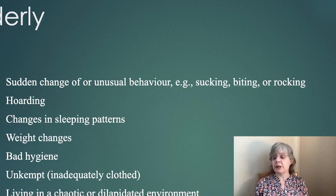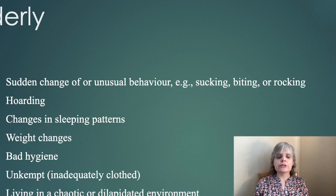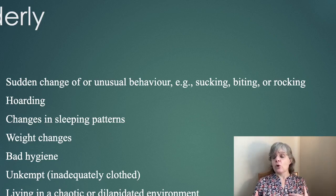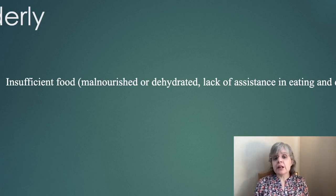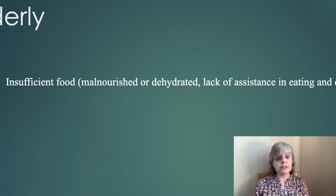Bad hygiene, especially if they've been neglected. Unkempt. Inadequately clothed. Living in a chaotic or dilapidated environment — they're not looking after themselves, or the carer is not looking after them as they should. They might have insufficient food, so they're malnourished. Not enough drink — they're dehydrated. Lack of assistance in eating and drinking. Remember, disorientation could be linked to being dehydrated.